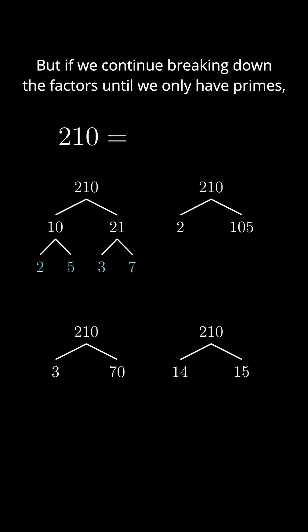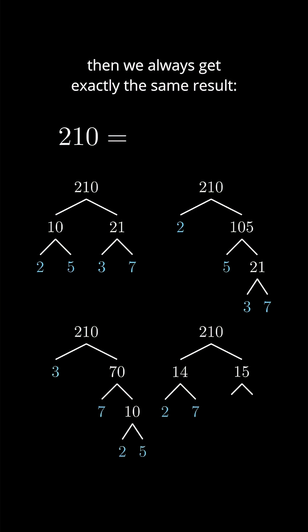But if we continue breaking down the factors until we only have primes, then we always get exactly the same result: 2 times 3 times 5 times 7 in some order.